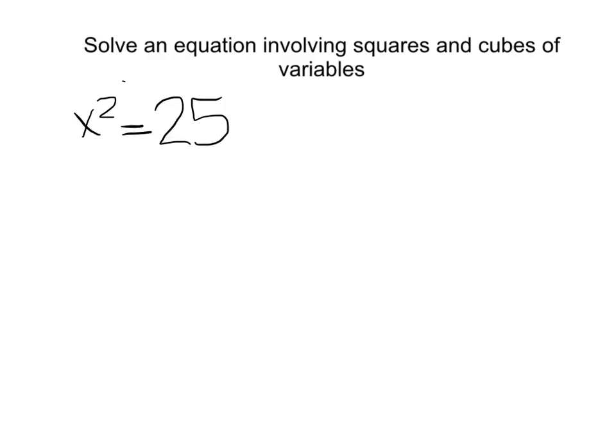In this case, what we're looking for is what value of x would give me 25 when it's squared. So you're really looking for the square root of 25. I'm looking for two numbers when they multiply together that are going to give me 25, and I realize that 5 times 5 is going to give me 25.